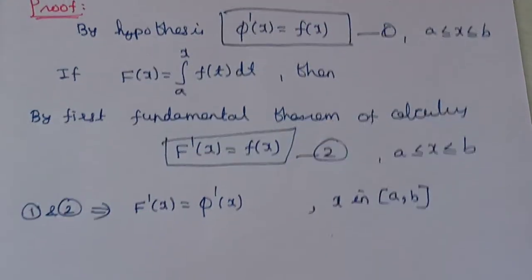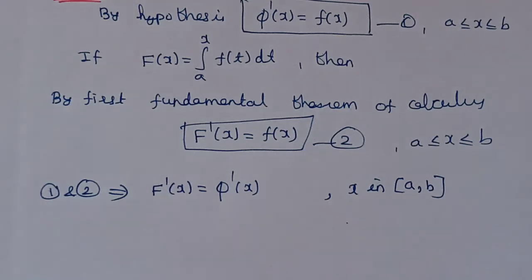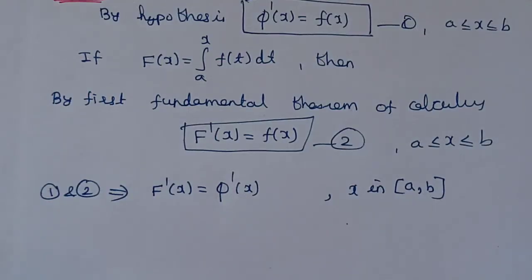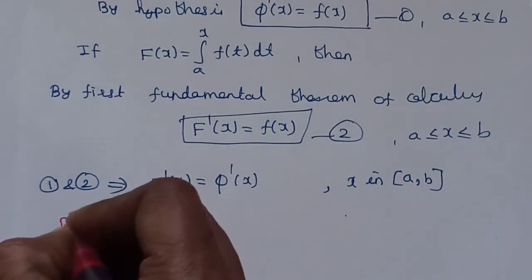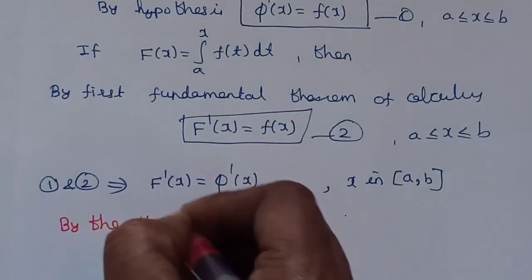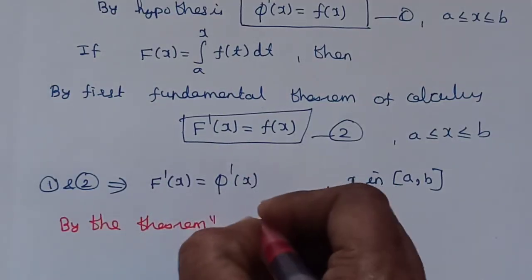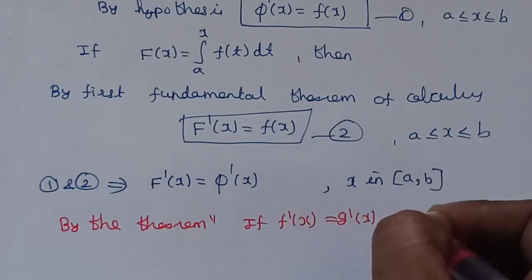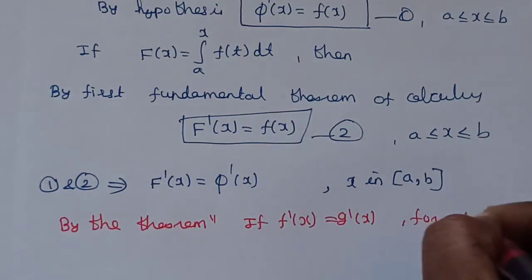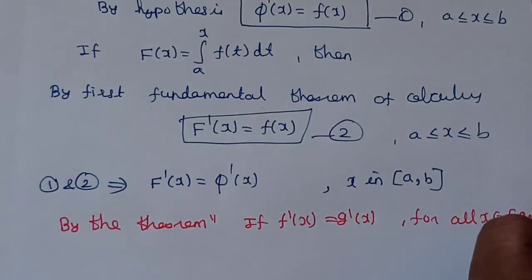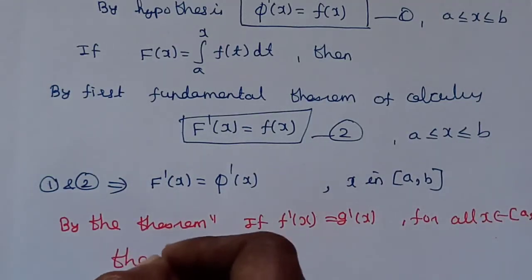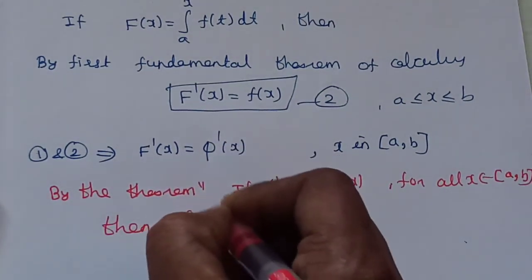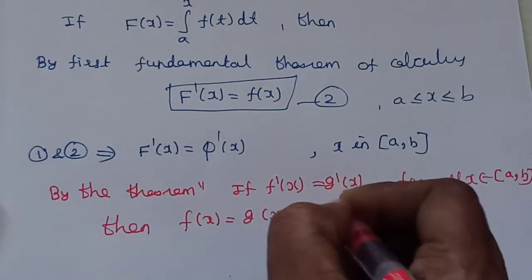So we have two functions whose derivatives are equal. By the theorem — result 7.8d — if F-dash of x equals g-dash of x for all x in the closed interval [a, b], then F(x) equals g(x) plus c.